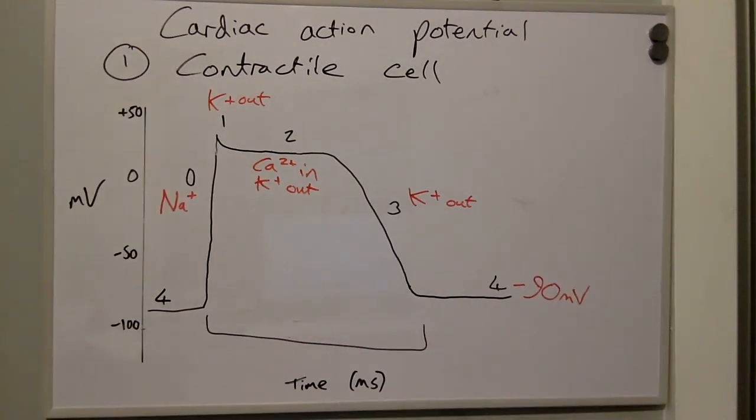For the majority of the action potential, contractile myocytes demonstrate an absolute refractory period. During this time, no stimulus, regardless of magnitude, can incite further depolarization. A relative refractory period exists during phase 3.